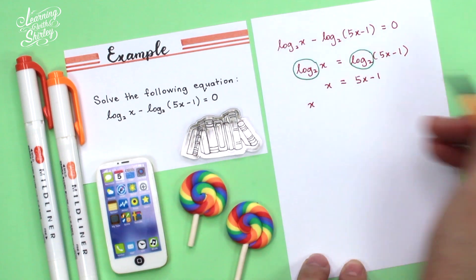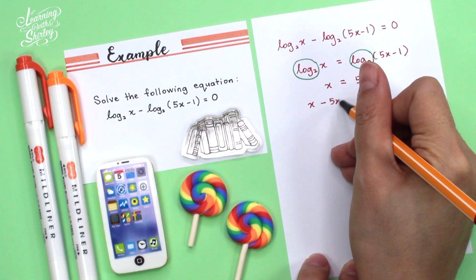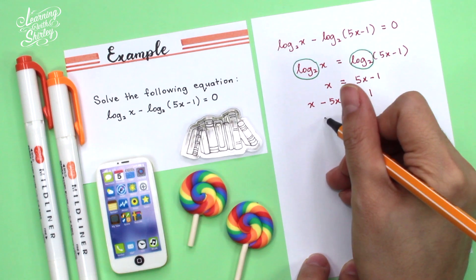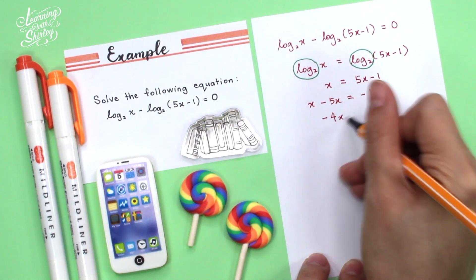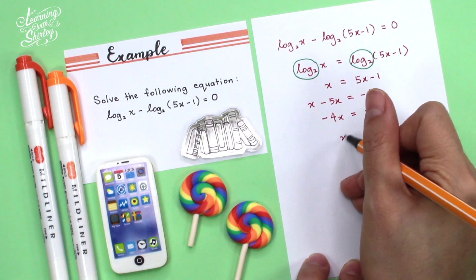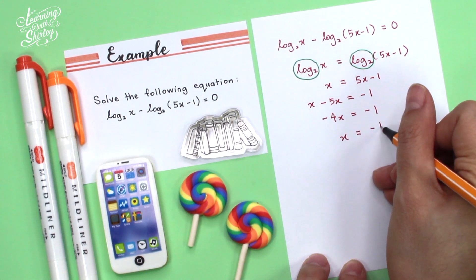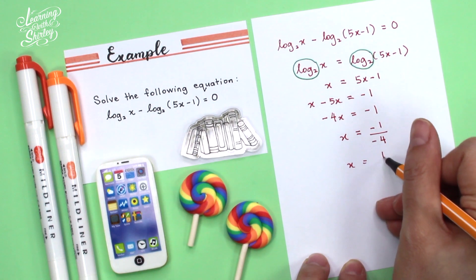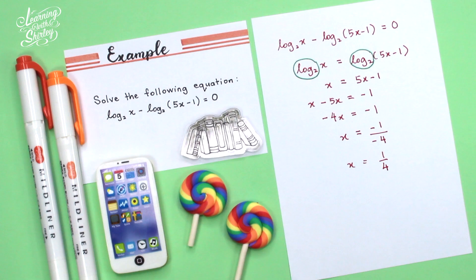So x minus 5x equals to negative 1. This is negative 4x equals to negative 1. So therefore, x is negative 1 over negative 4, so we get 1 over 4. And that's the answer.